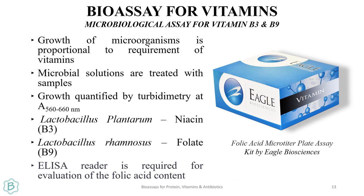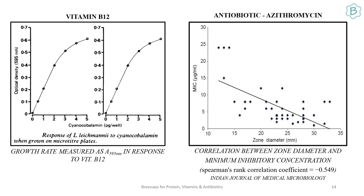Microbiological assay is available for measuring the concentration of vitamin B3 and B9. Microbial growth is monitored at a wavelength of 560 nm to obtain maximum optical density. This maximum optical density is measured in the presence of different concentrations of vitamins. Lactobacillus plantarum and Lactobacillus rhamnosus are two bacteria used in this assay. Once you have different data points — optical density at 560 nm for different vitamin concentrations — you can plot a standard curve and monitor bacterial growth in the presence of your sample to find the corresponding concentration.